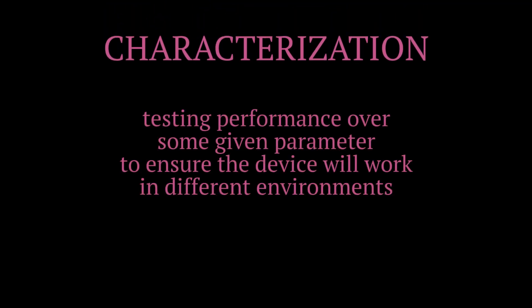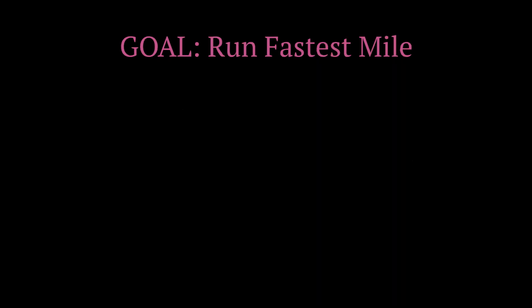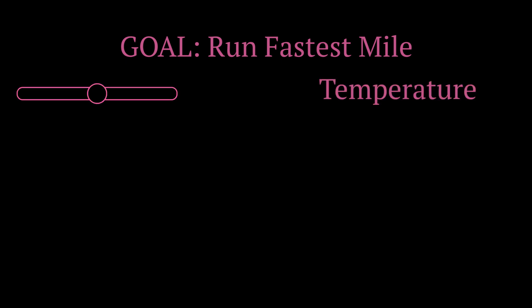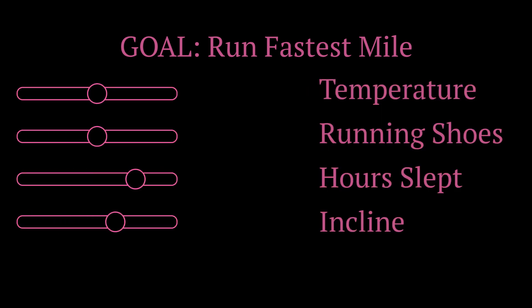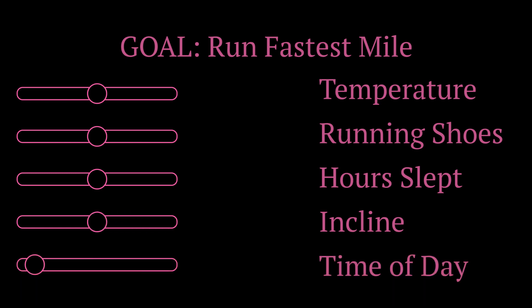In a nutshell, characterization is testing performance over some given parameter to ensure the device will work in different environments. As an example, let's say that you wanted to find the condition where you can run your fastest mile. To do this, you would have to run the mile several times with controlled conditions such as temperature, running shoes, hours of rest, incline, and even the time of day.